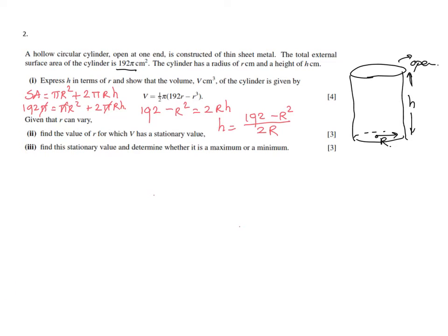Now we have to use that information to show that equation of the volume is true. How do you find the volume of a cylinder? Although it's not a prism, it behaves like a prism: cross-sectional area times height. So V = πr² times the height, which we just said is (192 - r²)/(2r).